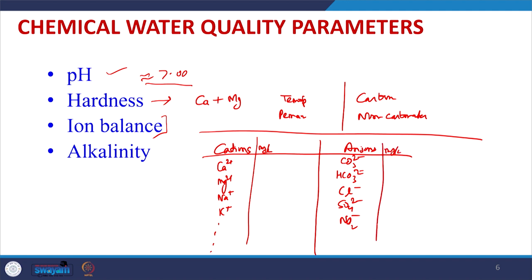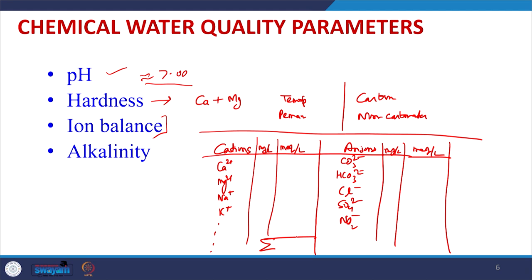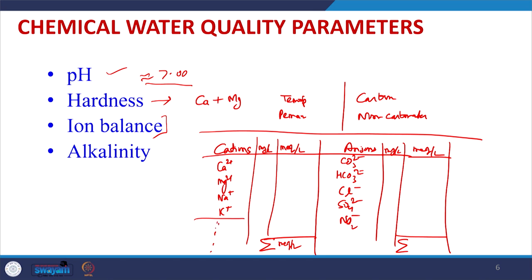We then convert values to milliequivalents per liter using the valency approach, and compare the total cations to the total anions. If there is more than 5% error in this balance, it means we are missing either some cations or anions. We may be missing heavy metals like arsenic or cadmium at high concentration, so we must determine those additional ions to properly complete the chemical water quality characterization.